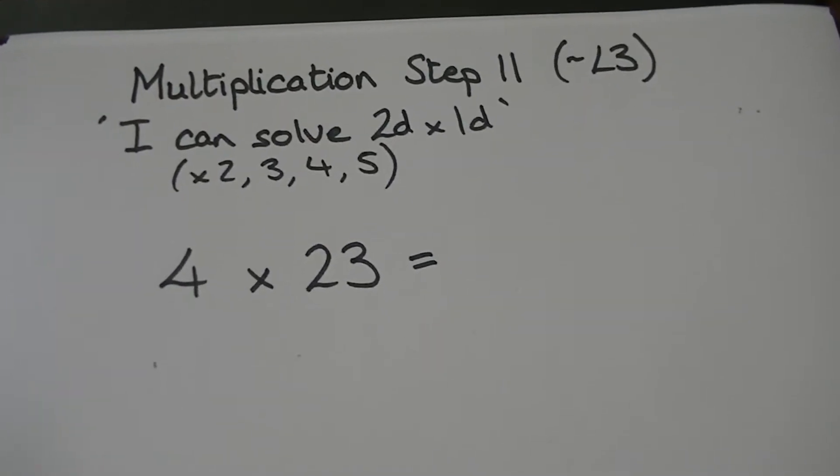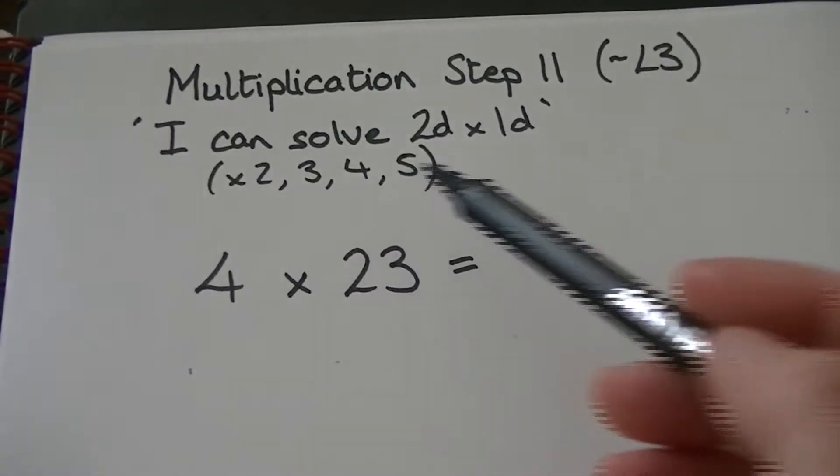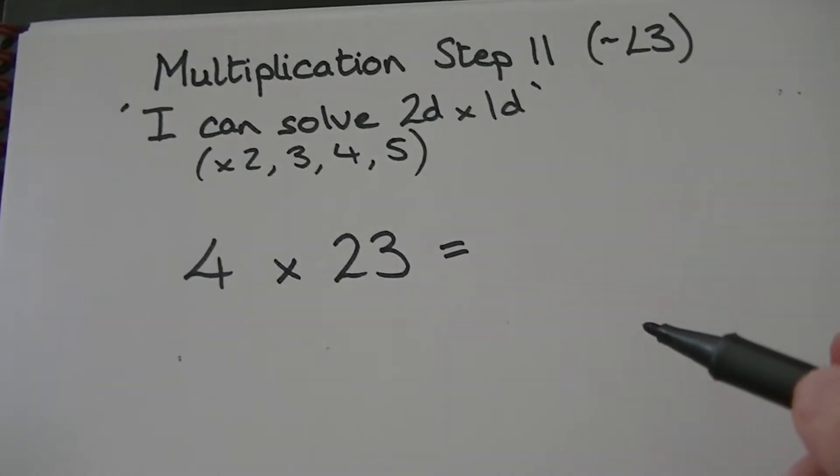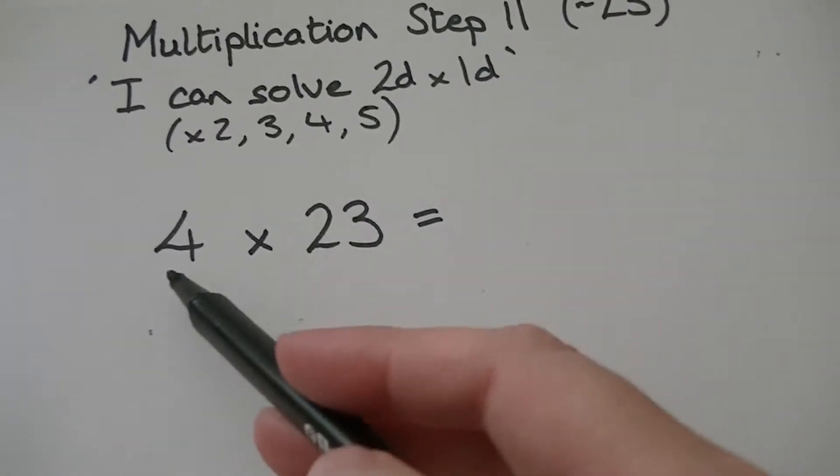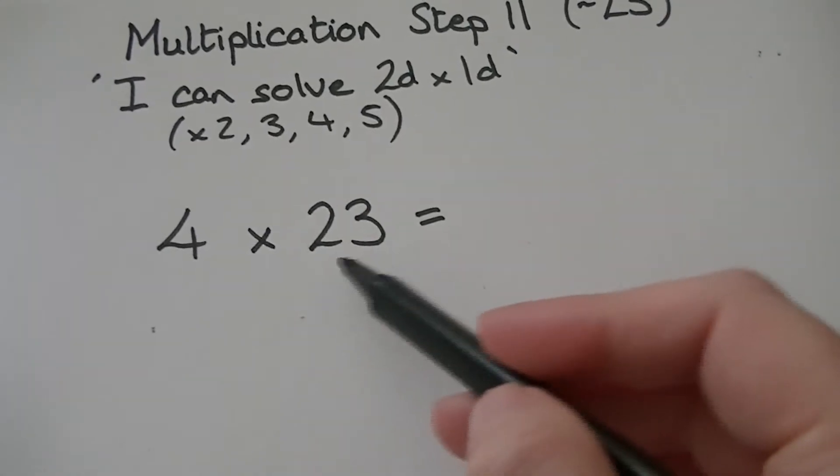Because we're just beginning, we're only going to use the 2, 3, 4, and 5 times tables. So we're moving on to 4 times 23. Here's our one-digit number, here's our two-digit number.